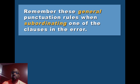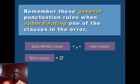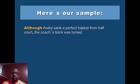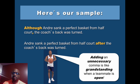Here are the general punctuation rules when subordinating one of the clauses. If the subordinate clause comes first, use: subordinate clause + comma + main clause. If the main clause comes first, use: main clause + subordinate clause — no comma needed. For example, 'Although Andre sank a perfect basket from half court' — you need the comma after 'court.' Dropping the comma is like a championship game turnover. But if the subordinate conjunction comes after the main clause, adding an unnecessary comma is like grandstanding — don't overdo it with commas.